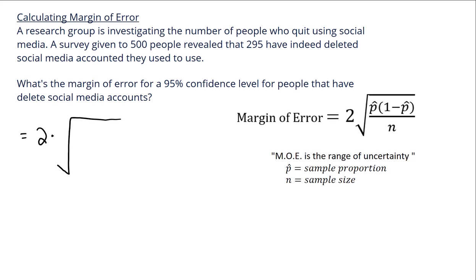We're going to also then put a bunch of stuff underneath this radical, which starts with p-hat, and that represents the sample proportion. And in this case, for p-hat, we have 295 people that said they've definitely deleted social media accounts before in the past, so that's 295. We divide that by the total number of people that were surveyed, which was 500.